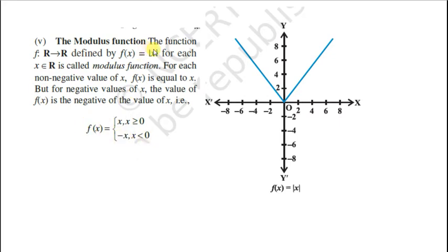Jaise agar minus 2 ka modulus nikalna hai, toh minus of minus 2, it becomes plus 2. Aur iska jab graph hota hai modulus function ka, it is a v-shaped graph with vertex at the origin. If it is mod x, then the vertex will be at origin.